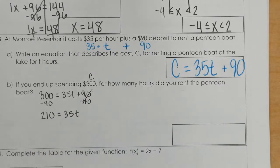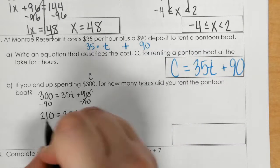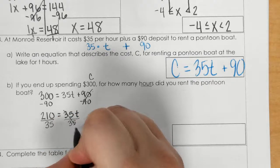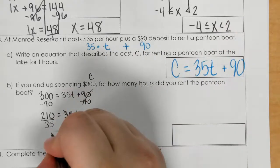Okay, if we then divide both sides by 35, we get 6 hours.